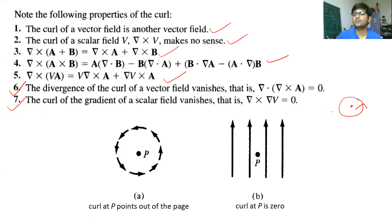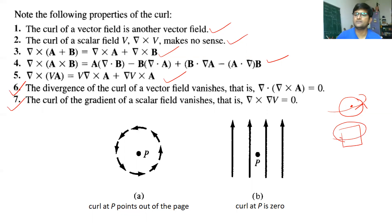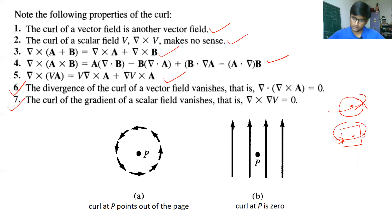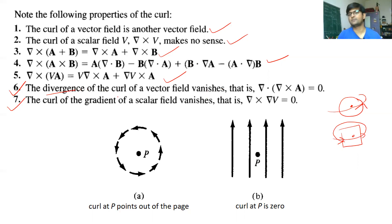Curl of any vector field represents its rotation. If you take a particular closed area and a vector that is rotating — meaning it is coming inside the area and going out also — then the divergence of its value is going to be zero. As discussed in the previous lecture, if the total incoming field lines equal the total outgoing field lines at any point, the divergence is zero. Divergence requires field lines to be either completely going outside or completely inside, which is not the case for a circulating curl field.